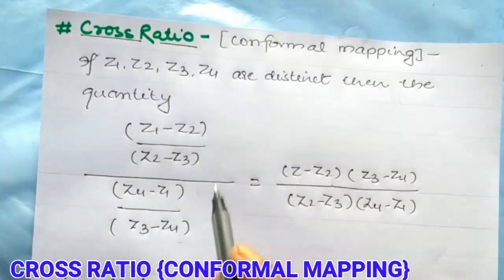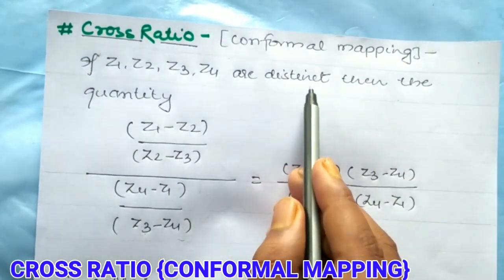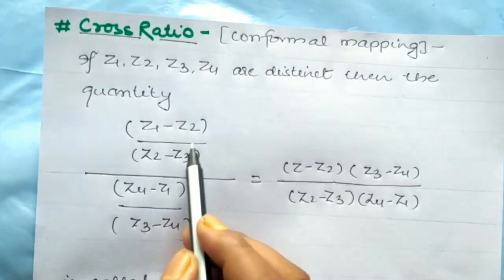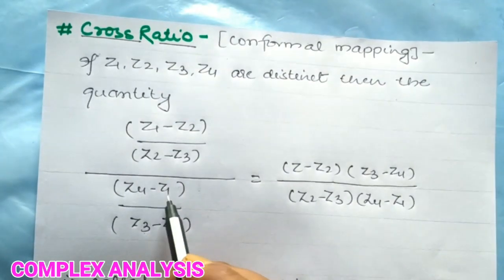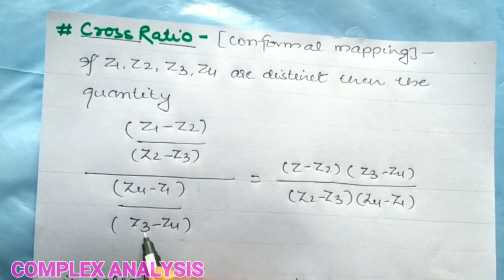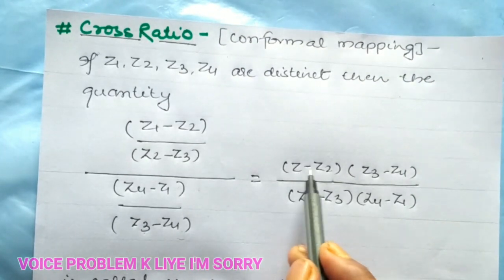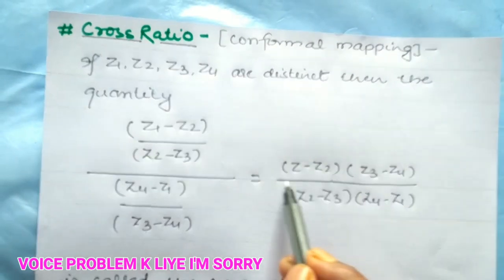If z1, z2, z3, z4 are distinct, then the quantity (z1 - z2) / (z2 - z3) divided by (z4 - z1) / (z3 - z4) is equal to (z - z2)(z3 - z4) / (z2 - z3)(z4 - z1).